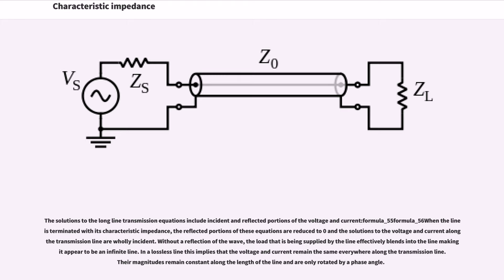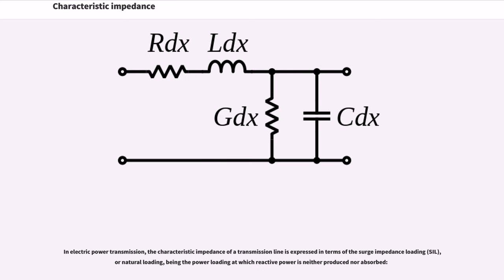Without a reflection of the wave, the load that is being supplied by the line effectively blends into the line, making it appear to be an infinite line. In a lossless line this implies that the voltage and current remain the same everywhere along the transmission line. Their magnitudes remain constant along the length of the line and are only rotated by a phase angle.